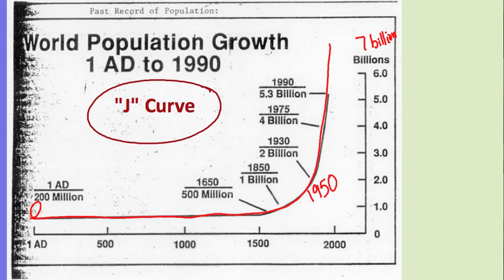World population growth since around 1 AD has grown very, very slowly until about the last 100 years, when you can see it curve up drastically and start growing exponentially. This graph of world population growth is called the J curve because it grows very slowly and in the last 100 years has seen rapid growth, and we have reached 7 billion at this point.